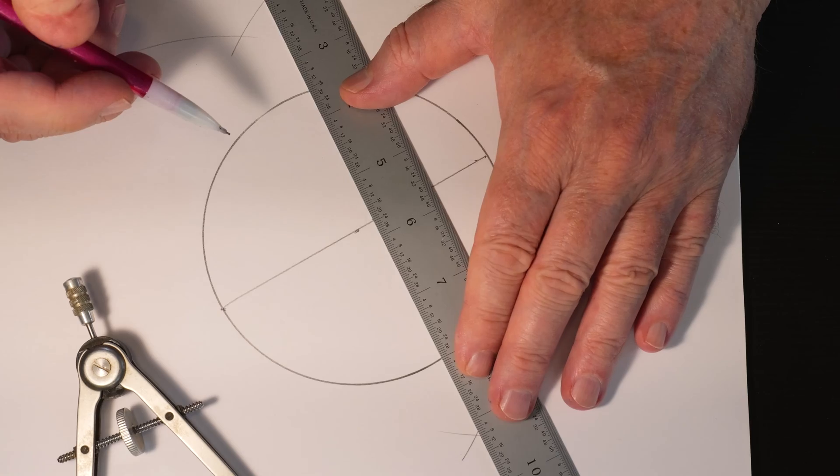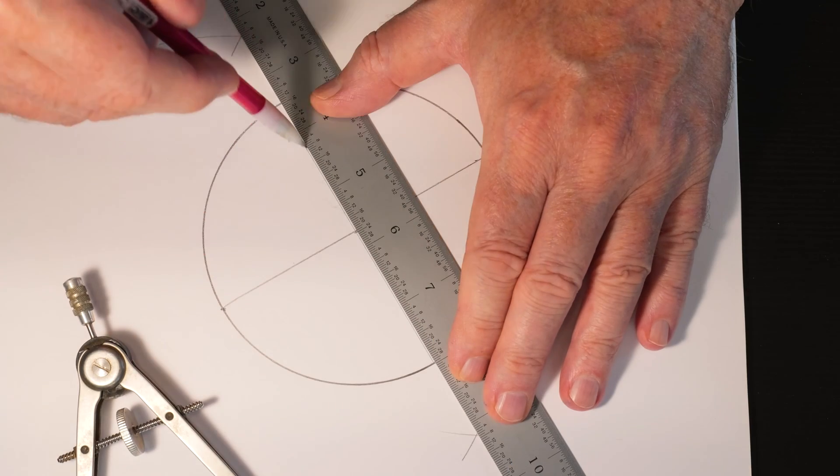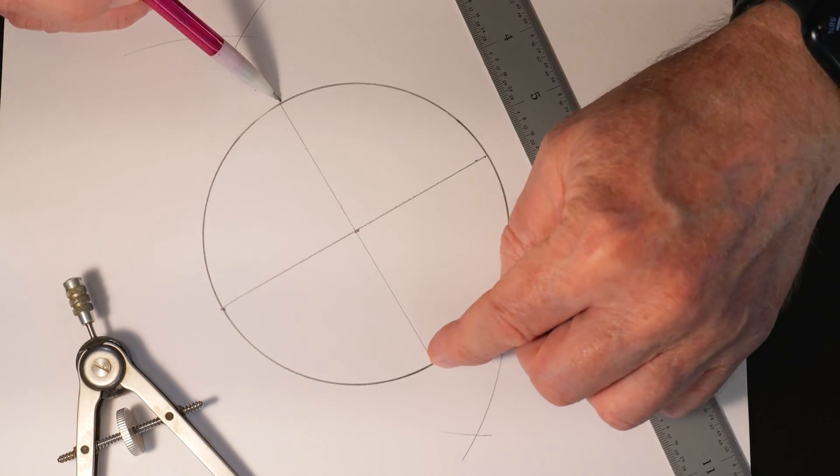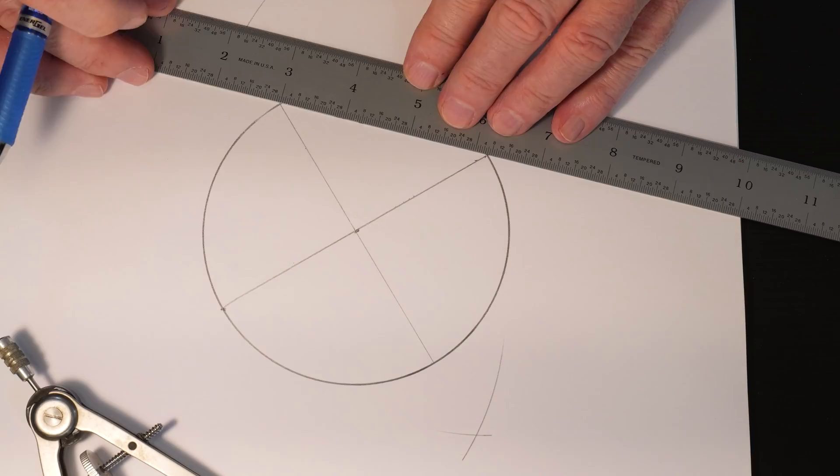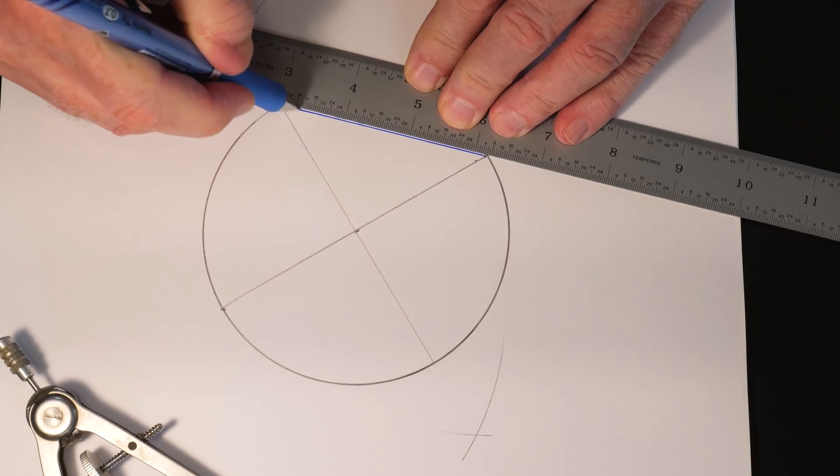Then we can connect those two arcs to find the line that's perpendicular, creating another diameter. Now all we need to do is connect those four points to get our square.